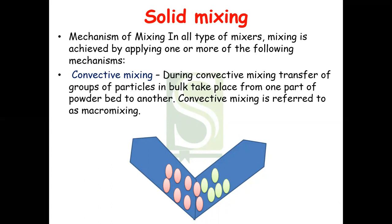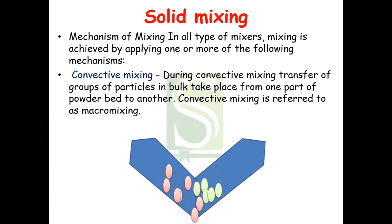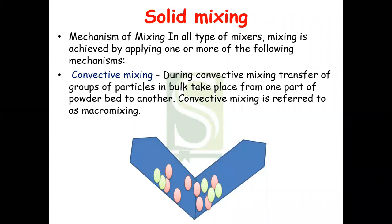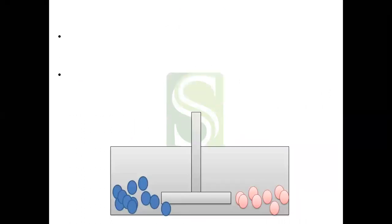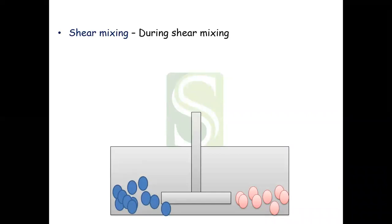Convective mixing is referred to as macro mixing. It involves transfer of groups of particles from one part to another in the powder bed. When this mixer shakes, we can see the bulk of the powder moves from one point to another. This process goes on continuously and because of this movement of groups, there occurs complete mixing.